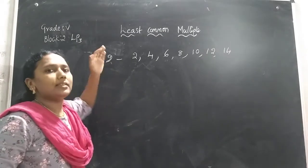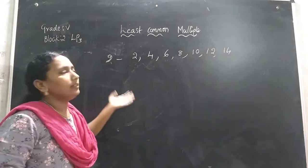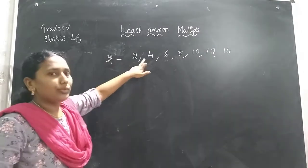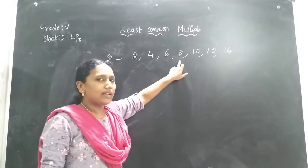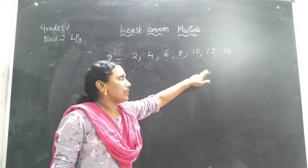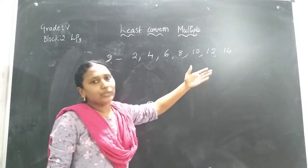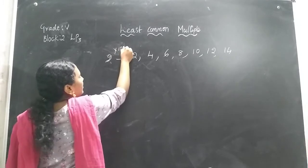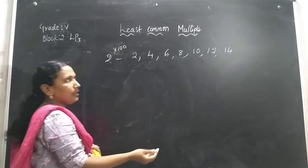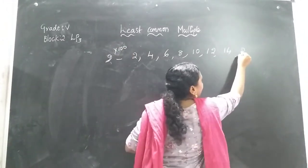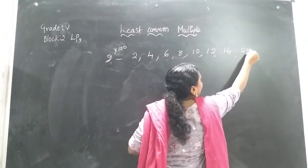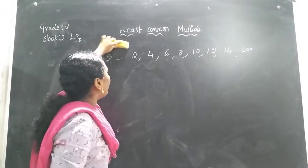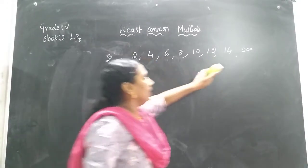The table of 2 gives the multiples: 2 ones are 2, 2 twos are 4, 2 threes are 6, 2 fours are 8, 2 fives are 10, 2 sixes are 12, 2 sevens are 14. Like that I can write 2 hundreds are 200, and 200 is also the multiple of the number 2. We can write the multiples for any number.